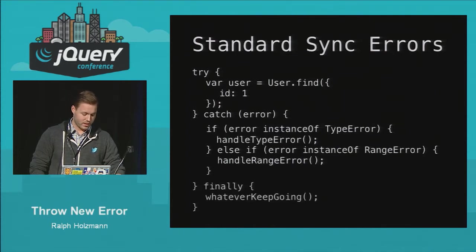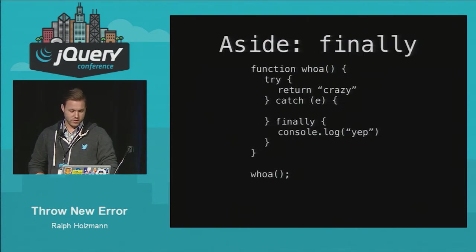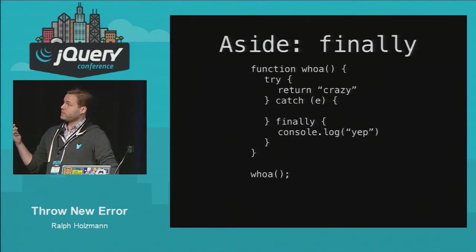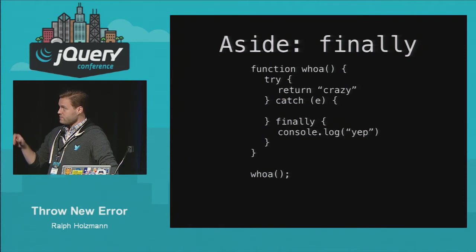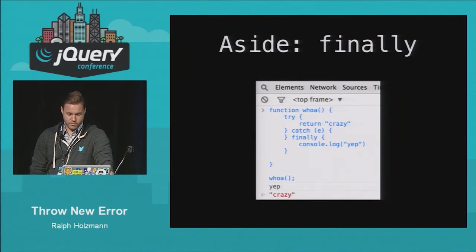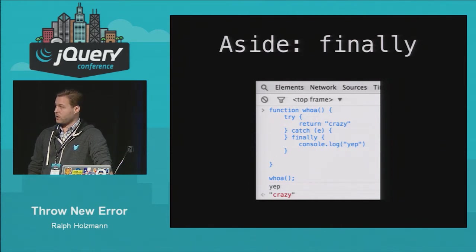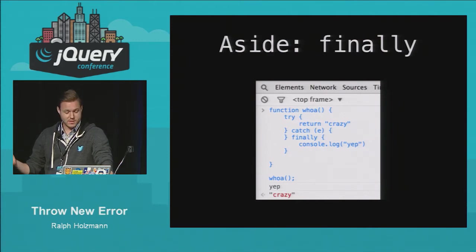A lot of people forget about the finally, which is optional on a try-catch. Finally is actually pretty interesting — no matter what you do, finally will run. So if we have a function called woe, and in the try block we return the word "crazy," the console will still log in the finally block. Even when you return from a function, you may not be returning from a function. Just keep that in mind.